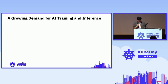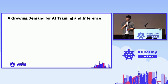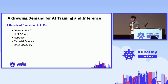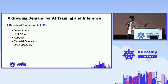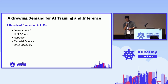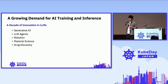Let's get started with some motivation. As you know, there is really growing demand for AI training and inference. We have so many applications in this field. It's now the decade of innovation in LLMs. Generative AI, such as ChatGPT and other vision transformers, is taking off. Beyond that, we have applications implementing LLM agents, applying to robotics, or finding discoveries in material science — those kinds of things are real right now in LLM.